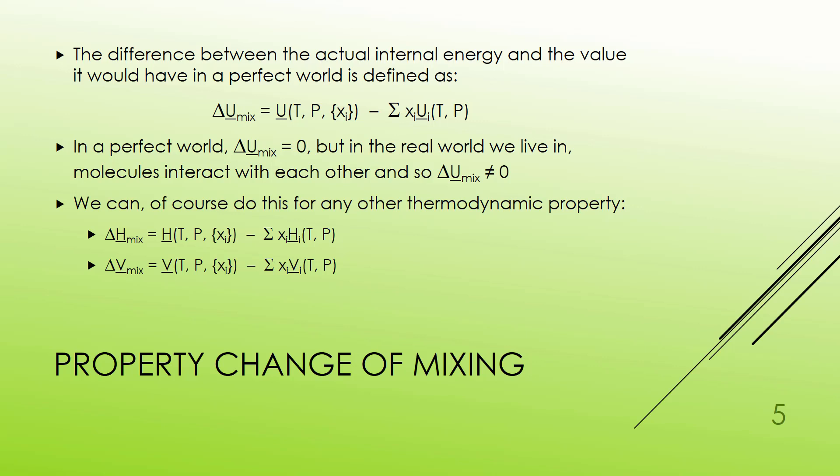So we're going to do this by defining a mixing property. Delta U of mixing, in this case, is the U that you actually have for your species compared to what you would have gotten in that perfect world, just taking the pure internal energies of each species and adding all of those up. Now if I do have something where the molecules are not going to interact, delta U of mixing will end up being zero.